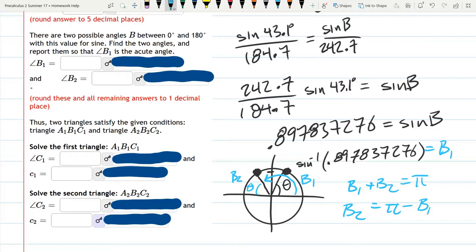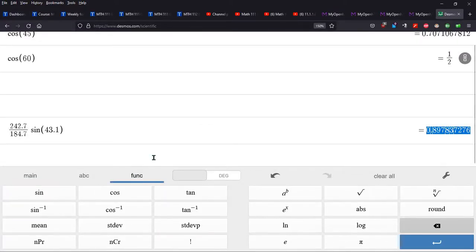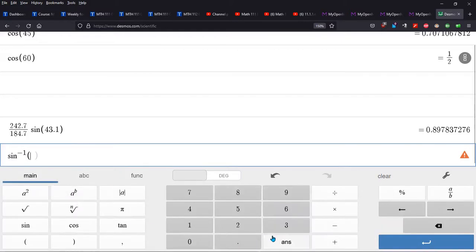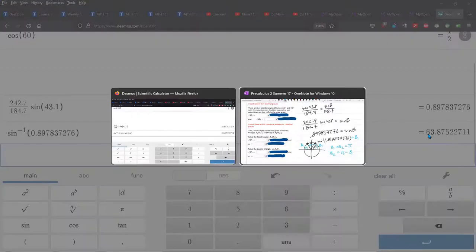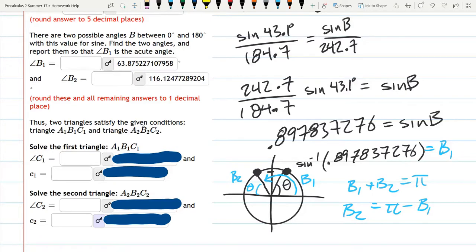And how to compute these? Well, we just need the inverse sine function of that decimal. So I'm going to go back to the calculator. This Desmos scientific calculator, I do have to hit func and sine inverse. And you could type in answer, it'll get that last value, or you could just paste in the value from the clipboard. There we go. 63.87 something. There we go. And then B2 is just pi minus this. That'll be right there.